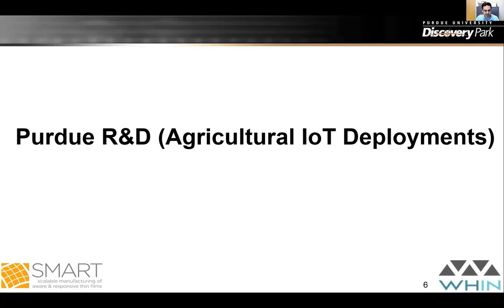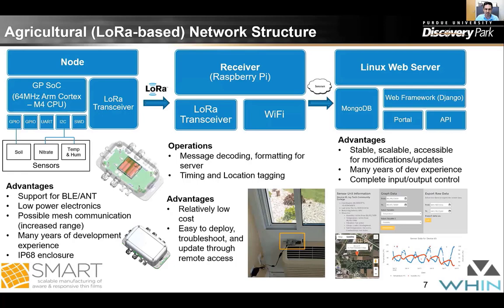The agriculture IoT network starts with a node that, through the LoRa communication protocol, sends measurements to a receiver gateway. That receiver, through an internet connection, uploads measurements to a web server where we've deployed the Django framework communicating through MongoDB. We can visualize measurements and information about nodes and sensors on our portal, and there is also an API developed for that.